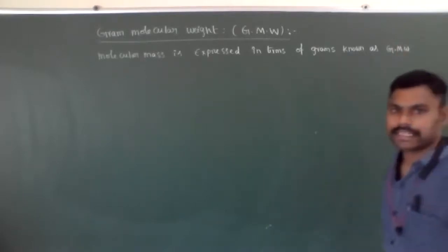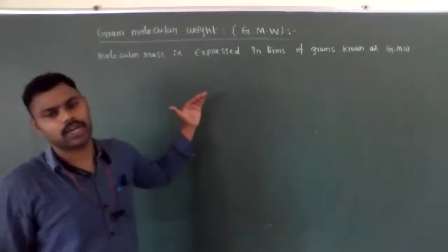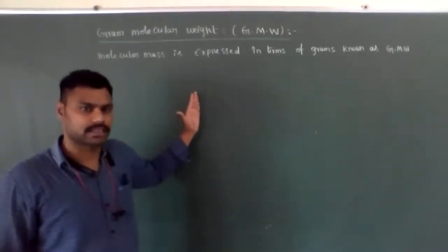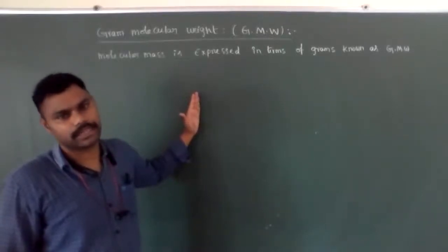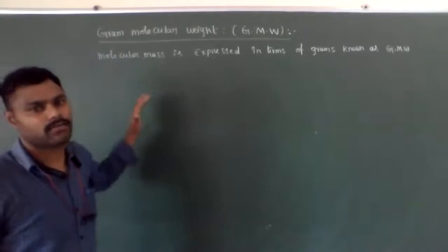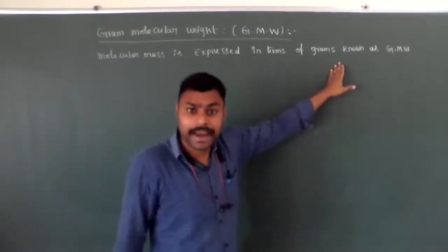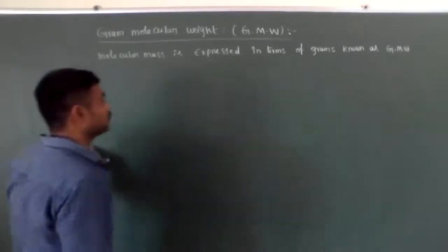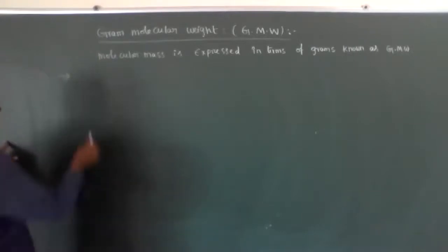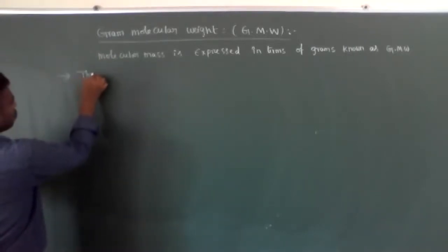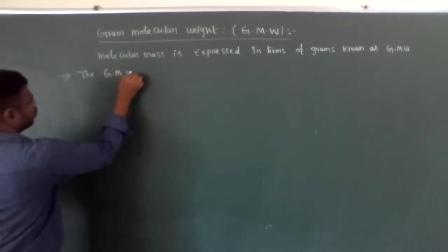Gram Molecular Weight is related to Molecular Mass. What is Molecular Mass? We already discussed it last class. For example, O2 has a molecular mass of 32 AMU. When that molecular mass is expressed in terms of grams, it is known as Gram Molecular Weight. The Gram Molecular Weight is very, very important.